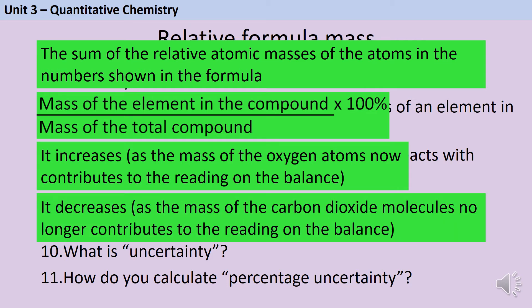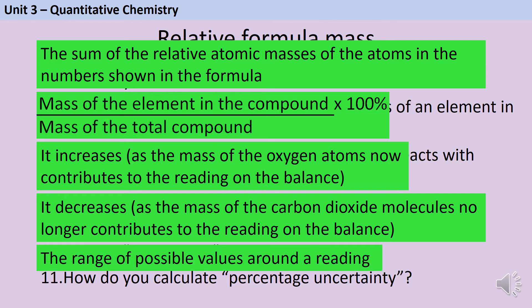In science, uncertainty is the range of possible values around a reading that we make using a piece of equipment. And to calculate percentage uncertainty, you need to look at the range of those values and divide by the mean value, and then multiply this by 100% to give a percentage.